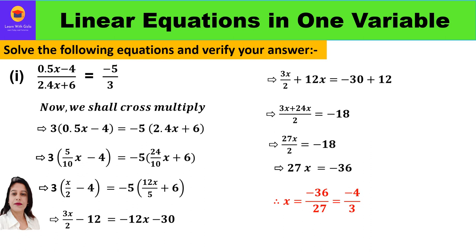Let's start with the first part: 0.5x minus 4 upon 2.4x plus 6 is equal to minus 5 by 3. The first step is to cross multiply, giving us 3 times (0.5x minus 4) equals minus 5 times (2.4x plus 6). To simplify, convert the decimals into fractions — since there is one decimal place, divide by 10. We get 3 times (5/10 x minus 4) equals minus 5 times (24/10 x plus 6). Simplifying: 5 and 10 cancel to give x/2, and 24/10 simplifies to 12x/5.